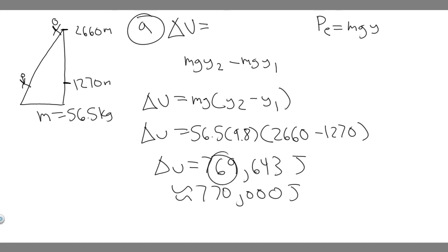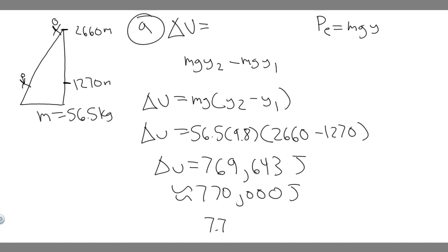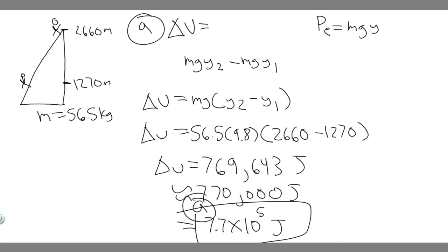Converting to scientific notation — counting five decimal places — this is 7.7 × 10⁵ joules. So this is the change in potential energy, and that's your answer to Part A.